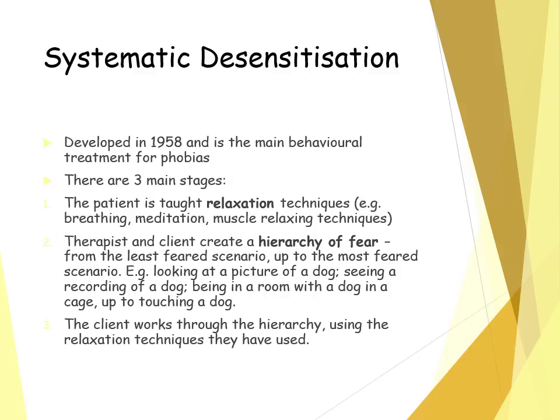For example, if a person has a phobia of a dog, the least feared scenario might be looking at a picture of a dog, then looking at a video or recording of a dog, then being in a room with a dog, touching the dog, and allowing a dog to sit on your lap. The third stage is that the client works through the hierarchy. When they become anxious and stressed, they use the relaxation techniques to help themselves calm down.